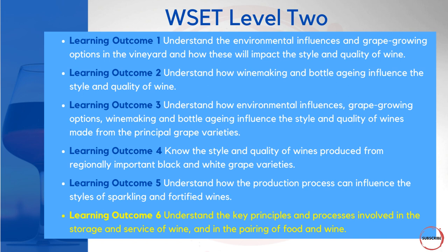Learning outcome 6 is all about understanding the key principles and processes involved in the storage and service of wine, and in the pairing of food and wine as well. What I would say about learning outcome 6 is that it actually doesn't carry that many marks when it comes to the final exam — it represents less than 10% of the overall score. So whilst I'm going to go through the assessment criteria one by one, I will be asking fewer questions for this particular part today. Let's have a look at what the assessment criteria for learning outcome 6 is all about.